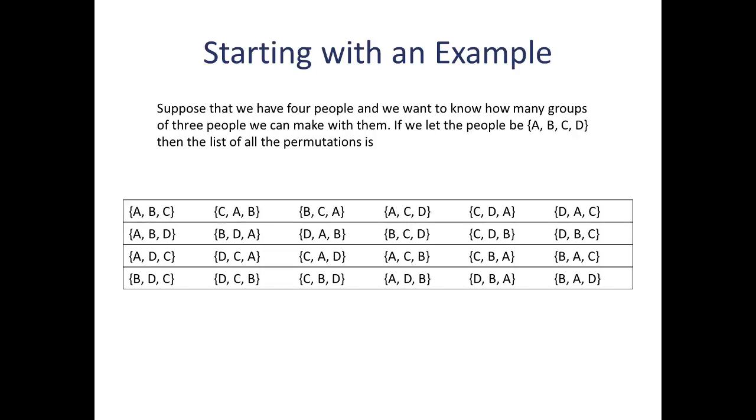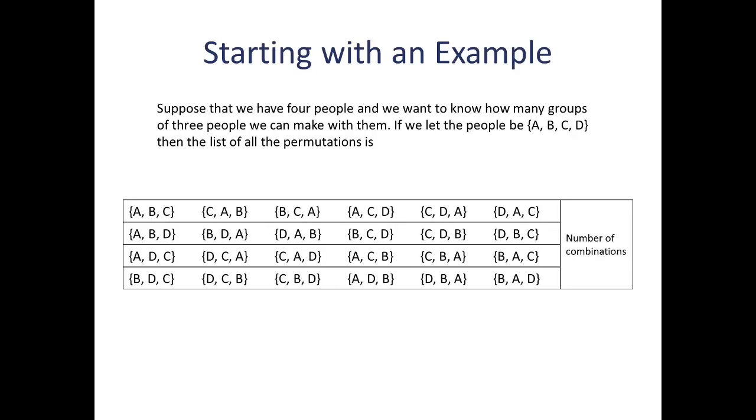Now, to see how many duplicates we have, I'm going to take my list and rearrange it so that all of the sets that represent the same combination, that is, that have the same letters, even if the order is different, are on the same row. Now, the first row has all the combinations of the letters A, B, and C. The second row has all the combinations of the letters A, B, and D, and so on down the rows here.